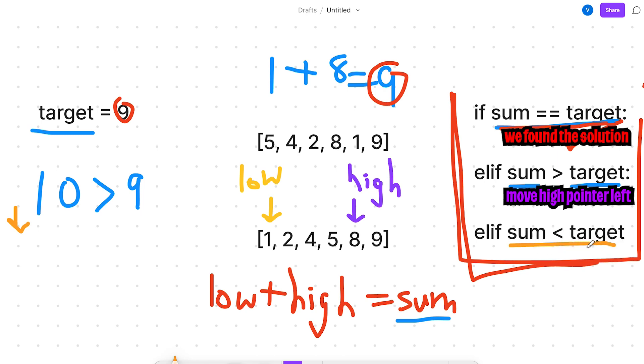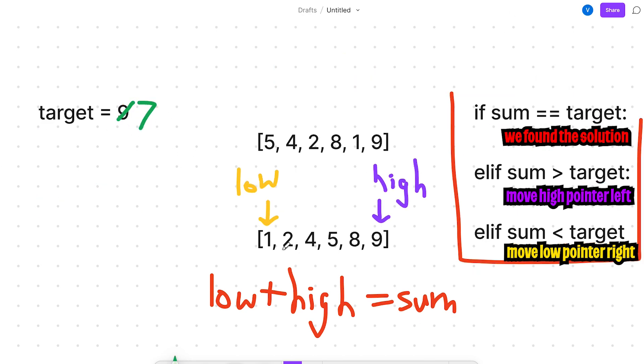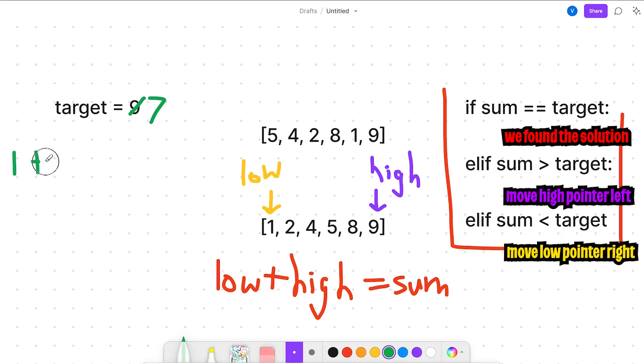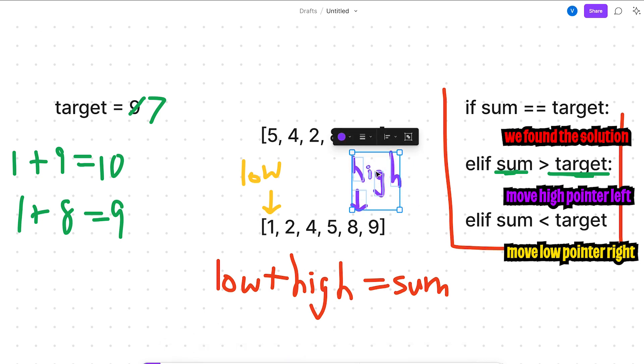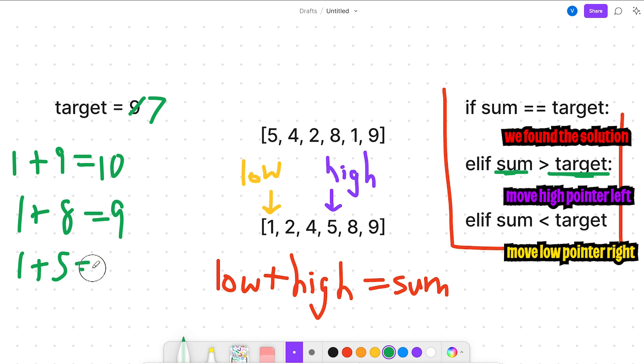And in the last case, if our sum is less than the target, what we want to do is basically move the low pointer to the right, which will basically increase our sum. So let's run through one more example together. So let's change the target to 7 instead. So right now our low and high is 1 and 9. So let's add them together. So 1 plus 9 will give us 10. So right now our sum is greater than the target. So basically, we can just move our high pointer to the left. So now we have 1 plus 8, which will give us 9. So right now our sum is still greater than the target. So we can move our high pointer to the left again. So now we have 1 and 5. So 1 plus 5 equals 6. And now basically, our sum is less than our target. So now we can move the low pointer to the right. And now we get 2 plus 5, which equals 7. And there you go. Our sum equals our target. And we are done.